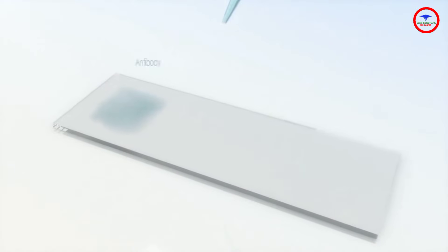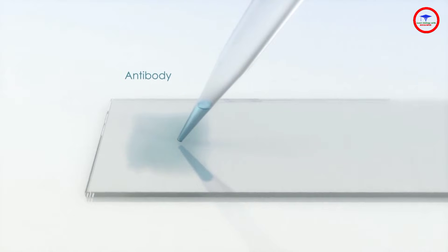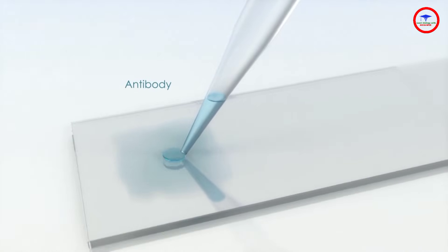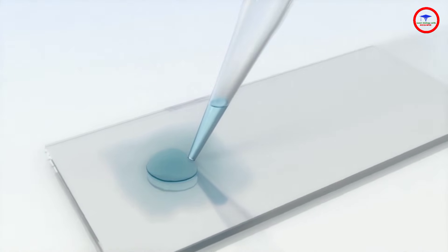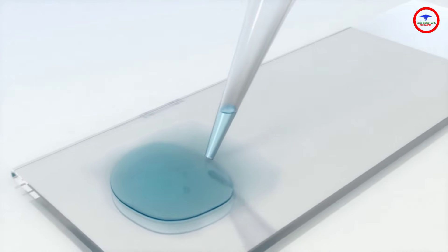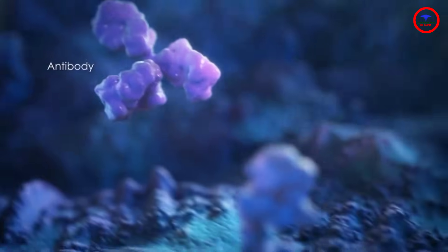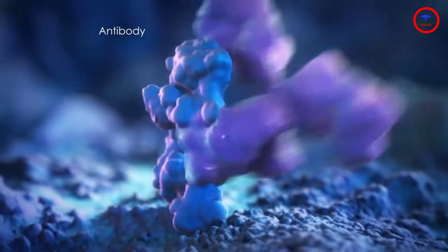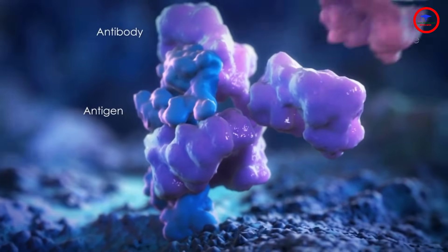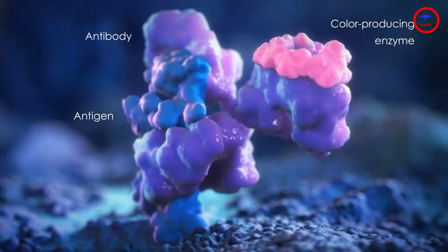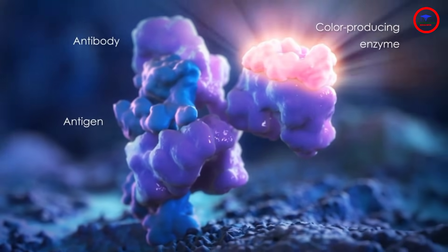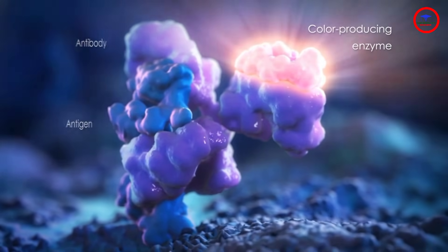IHC uses the same antibody-antigen interaction to detect target antigens in patient specimens. A thin slice of the specimen is first adhered onto a microscope slide, and then antibodies that recognize a specific antigen are added to the sample. If the antigen is present in the patient sample, then the antibody-antigen interaction can be detected by using a color-producing enzyme.